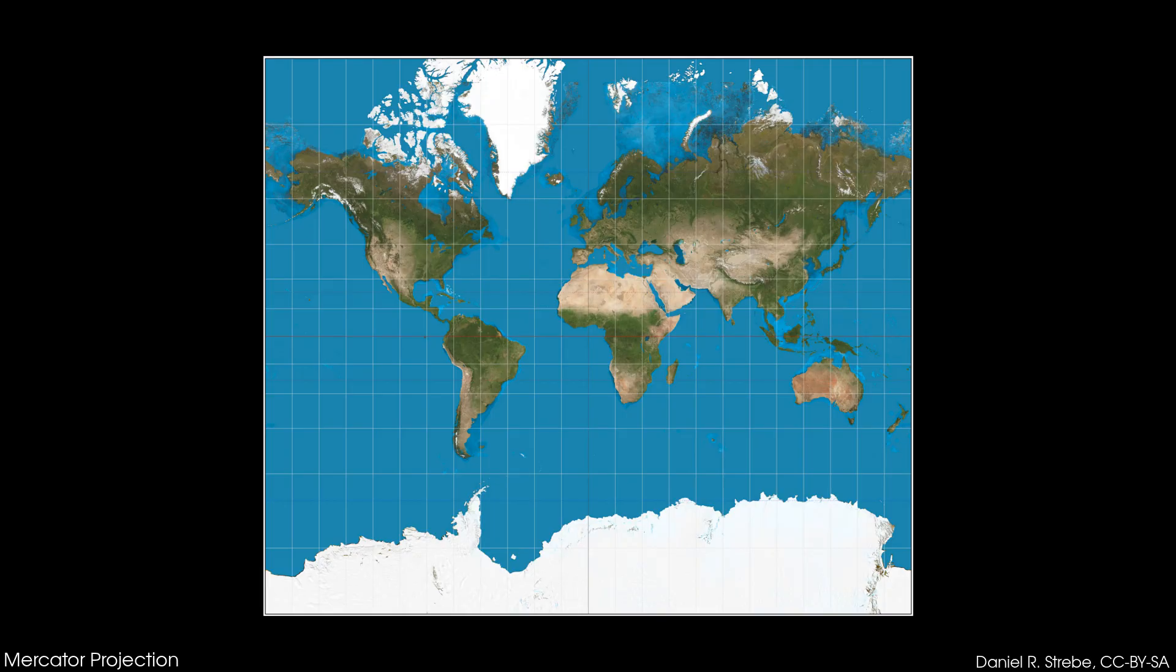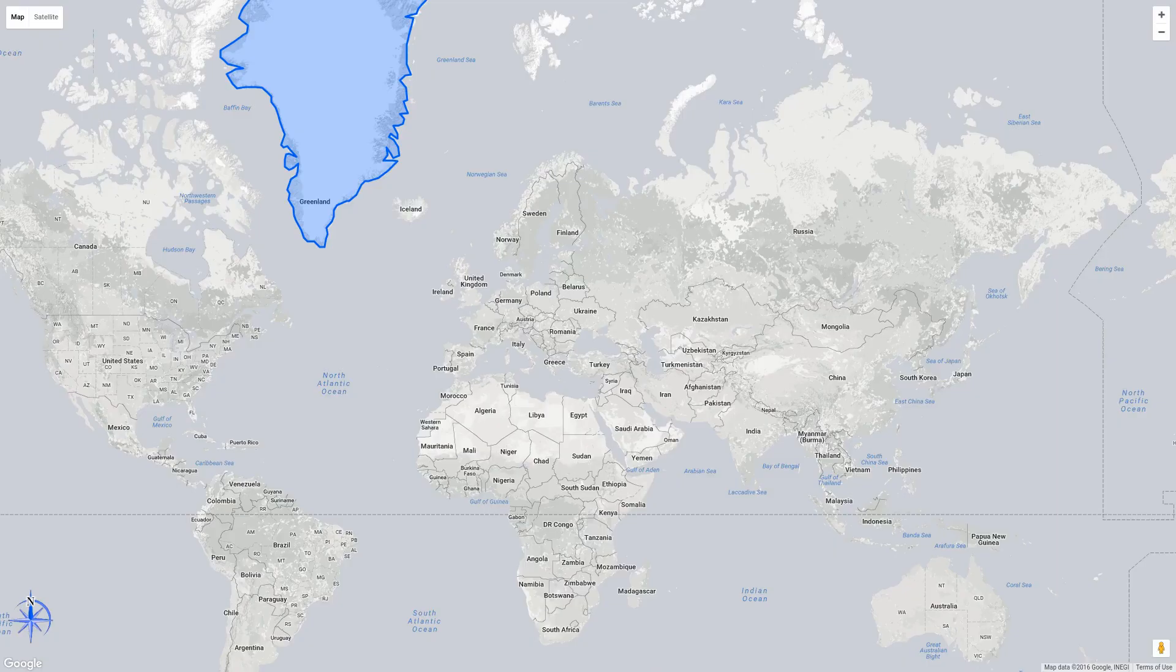With the common availability of flat world maps, this leads to many confusions until today. Greenland appears larger than India, but that is only due to the distortion introduced by the Mercator projection, used by services like Google Maps. In reality, it is much smaller than India.